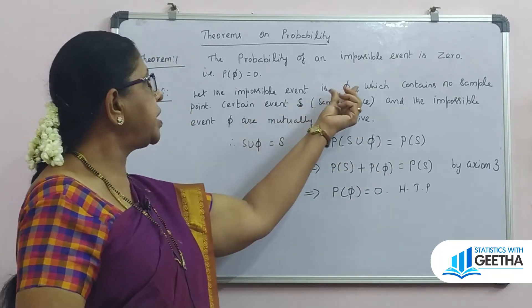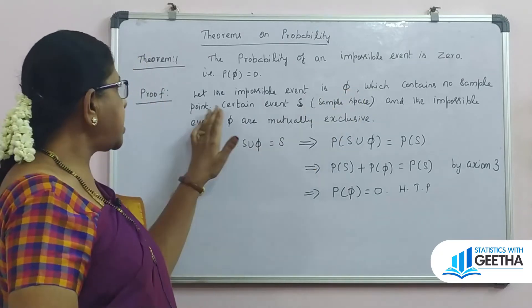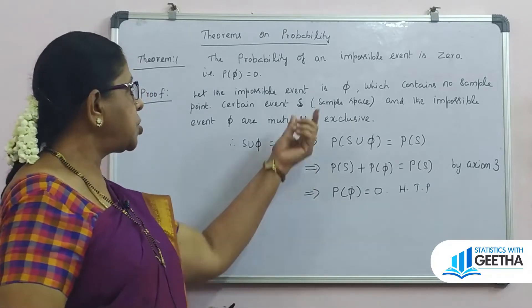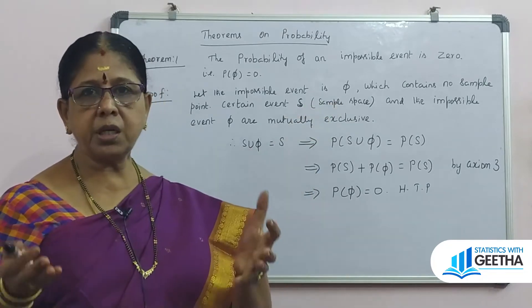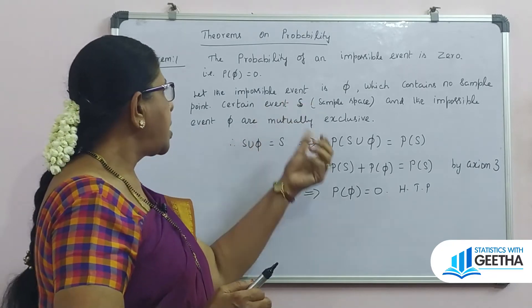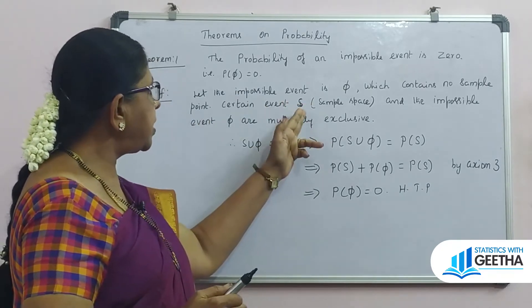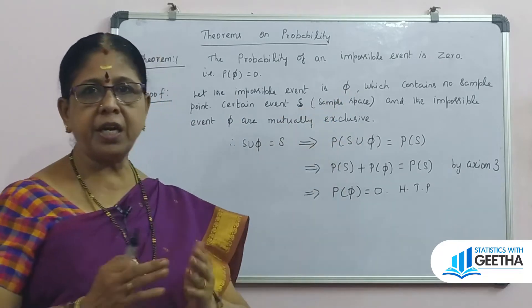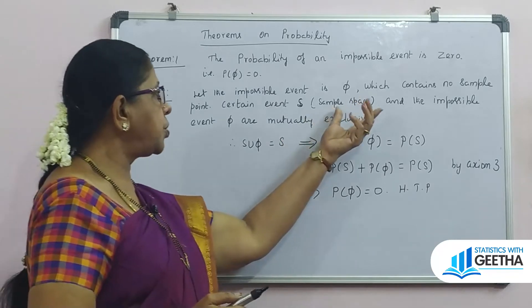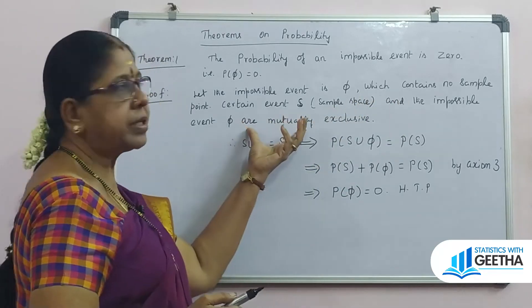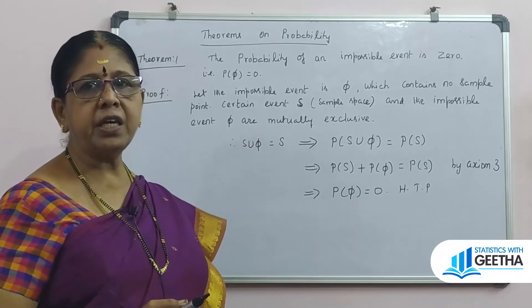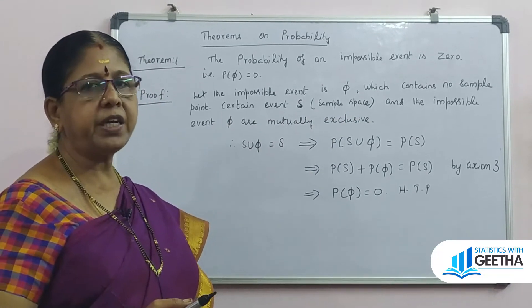There is no sample point in the event π. Our whole sample space is called S, which contains the totality of all possible outcomes. S and the impossible event π are mutually exclusive or mutually disjoint events.